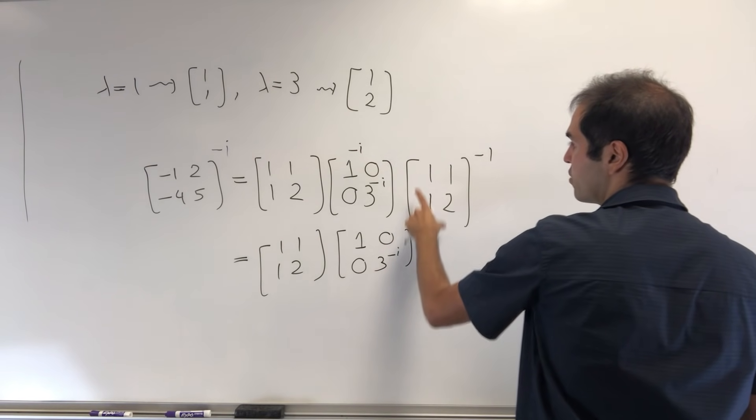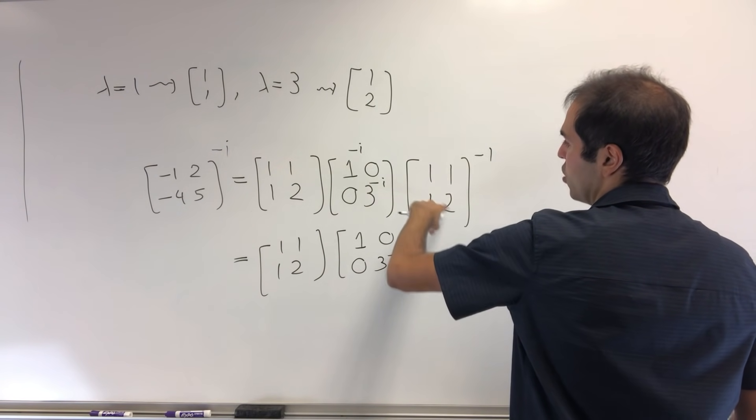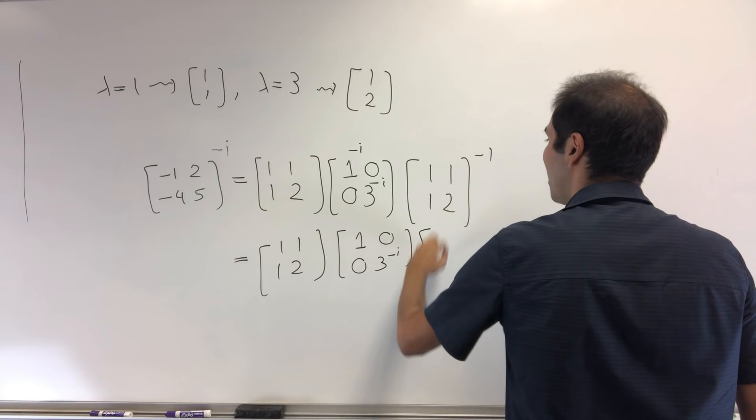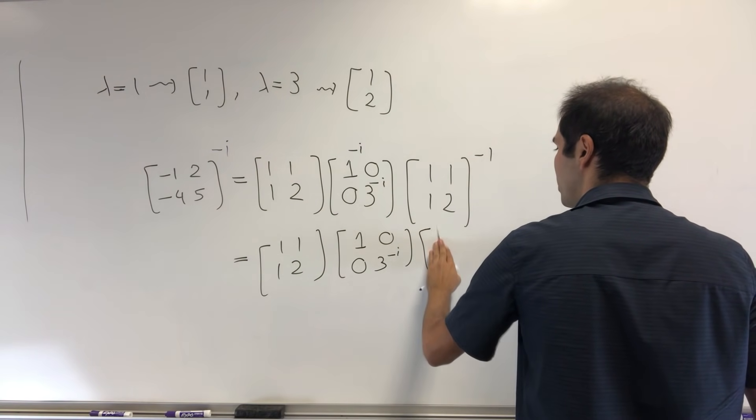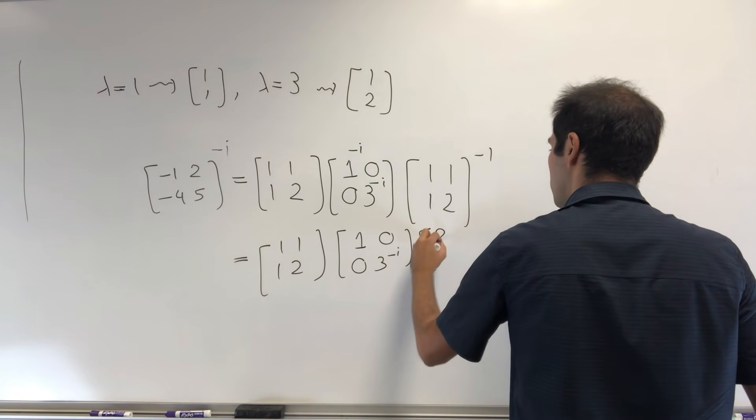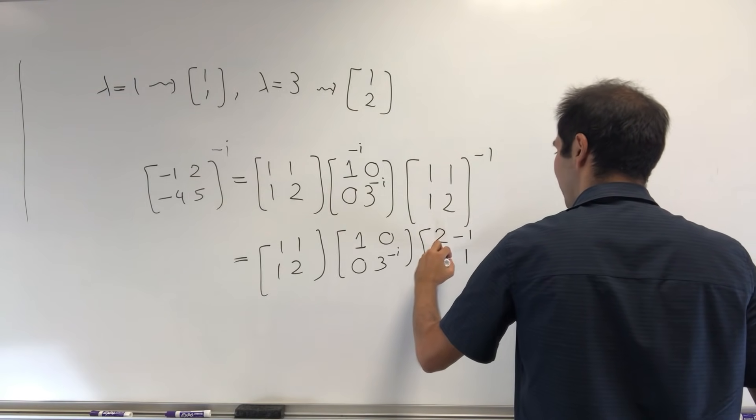And then the inverse. Remember, it's 1 over the determinant, which here is 1, and then you flip the entries to get [2, -1; -1, 1].